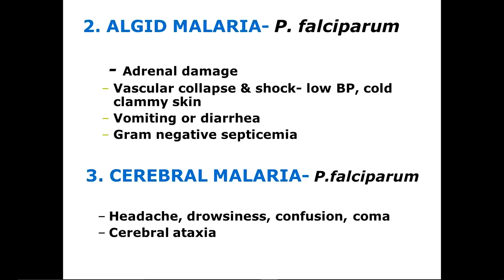The second complication is algid malaria, caused by adrenal gland damage. There is peripheral circulatory failure presenting as a systolic blood pressure less than 80 mmHg in the supine position, with cold clammy skin which may be cyanotic, and a rapid feeble pulse. Hypovolemia due to reduced fluid intake, high-grade fever, sweating, vomiting, and diarrhea may also contribute to reduced pressures. Gram-negative septicemia has been implicated as an important cause of hypotension in some cases of falciparum infection — gram-negative bacteria multiplying in the bloodstream.